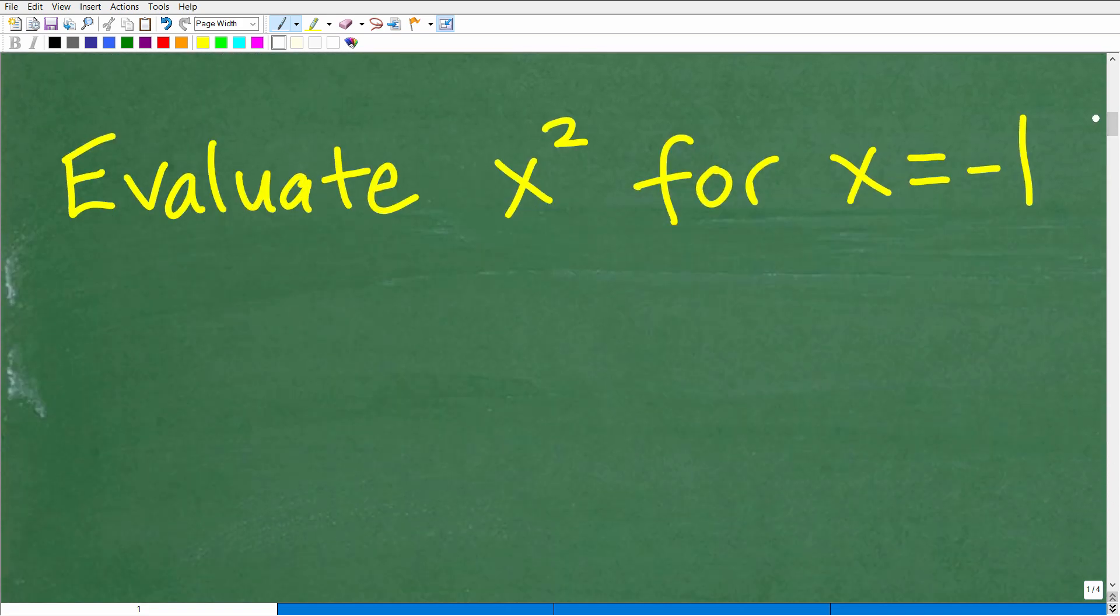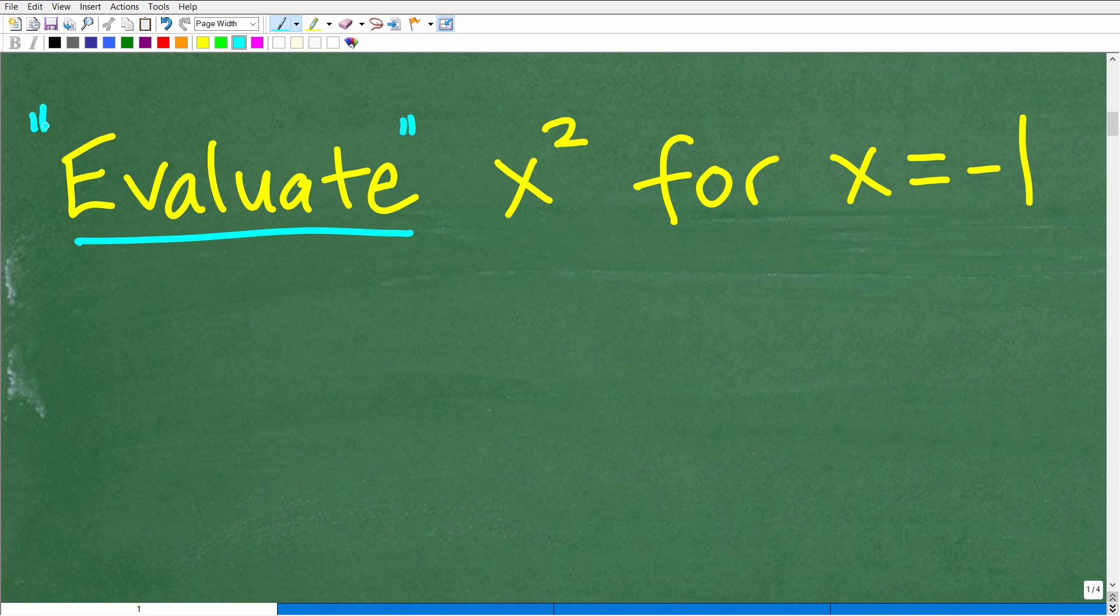So the first thing we want to understand is what does this word mean in algebra? Evaluate. Well, evaluate means when we are given some sort of variable expression. Now, there's a difference between an expression and an equation. For example, x squared is just expressing something. So this is just an expression. But as soon as I put an equal sign like x squared plus 1 equals 9, now this is an equation. So we really want to improve our algebra vocabulary.